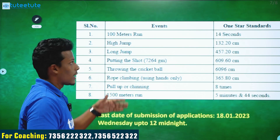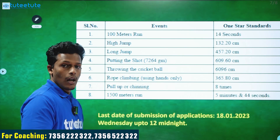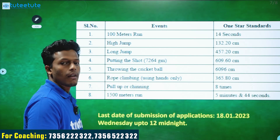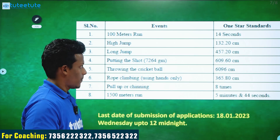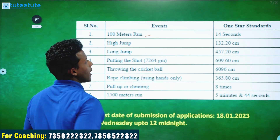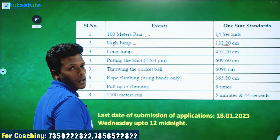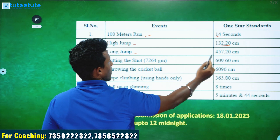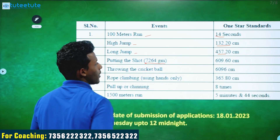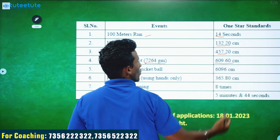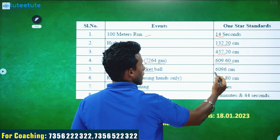The physical test consists of 8 events. The 100m run must be completed in 14 seconds. High jump is 138.5 cm. Long jump is 487.5 cm. Shot put weight is 7 kg with a distance of 680.6 cm. Ball throw is 395.